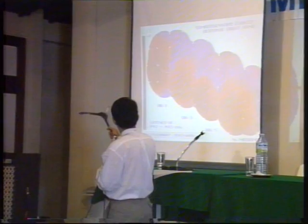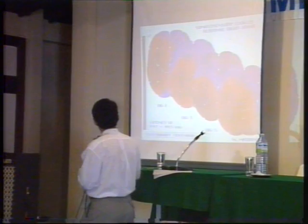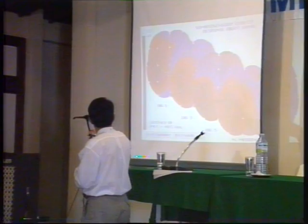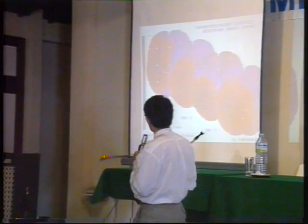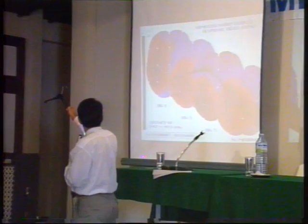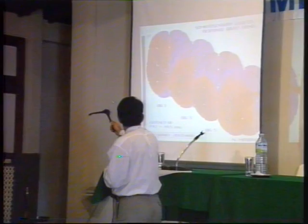If you use this 10-20 system and you stimulate the first digit, you get a maximum over the contralateral C3 electrode. When you stimulate the fifth digit, you get the maximum here. So even in the 10-20 system, we have a resolution sufficient to distinguish between the first and the third finger, with the third finger's activity somewhere in the middle. And this is the P47 of the median nerve.